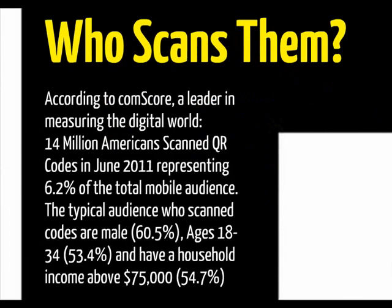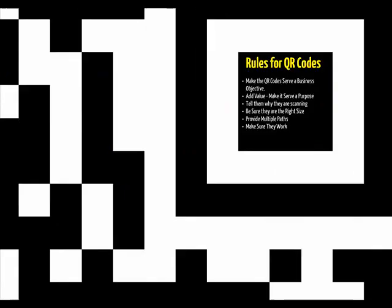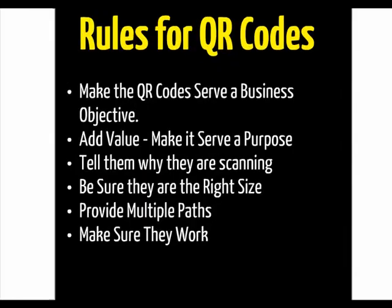According to Comscore, who's a leader in measuring the digital world, in June of 2011, 14 million Americans scanned QR codes. And the exciting part about that is over 54% of those people had a household income above $75,000. That's certainly a lot of discretionary income.